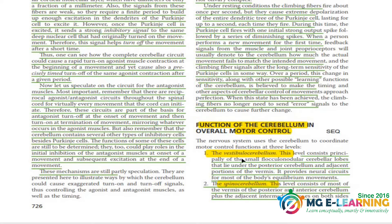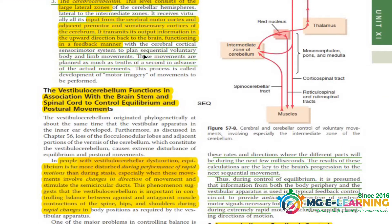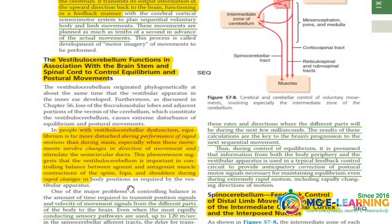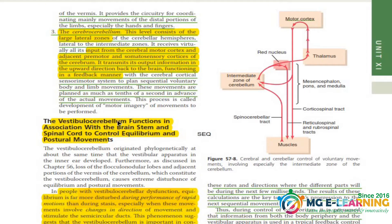The cerebellum is divided into three parts: the vestibular cerebellum, the spinal cerebellum, and the cerebro-cerebellum. You have to memorize all the functions of these three parts. The vestibular cerebellum and its function in association with the brain stem and spinal cord for equilibrium and postural movement — the highlighted text is the important part; you can neglect the unhighlighted portion but read it for your concepts.